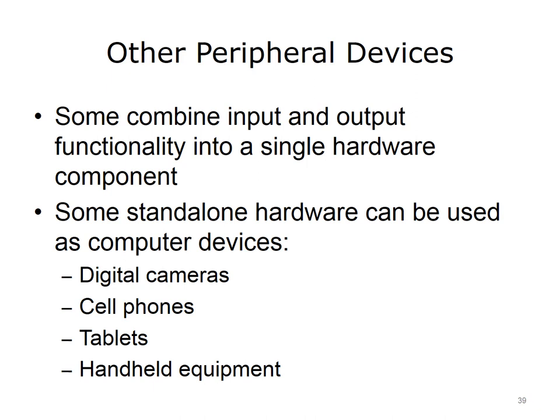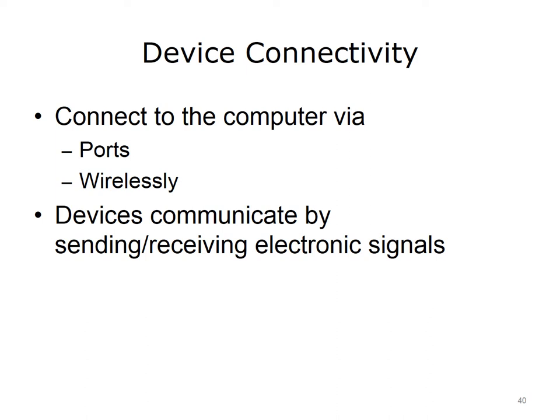Some peripheral devices, such as touch screens, combine input and output functionality into a single hardware component. Some stand-alone hardware can also be used as computer devices — examples include digital cameras, cell phones, tablets, and handheld equipment. Devices usually connect to the computer via a port but can also connect wirelessly, such as a wireless printer. Devices communicate by sending and/or receiving electronic signals.